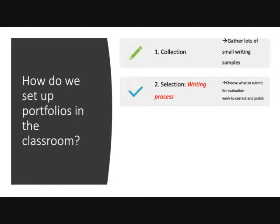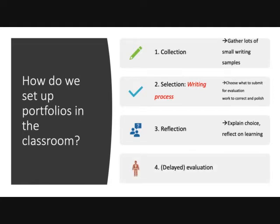Out of the 10 pieces you have, choose your best one or two, and then you're going to make it even better by correcting it and polishing it through the writing process. Then they're going to reflect — collection, selection, reflection. Students have to explain why this choice and reflect on their learning. And finally, delayed evaluation — collection, selection, reflection, delayed evaluation. It's delayed because the teacher only evaluates the best work. This is a win-win situation.